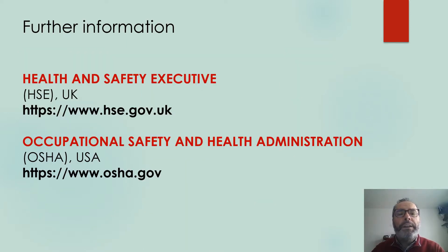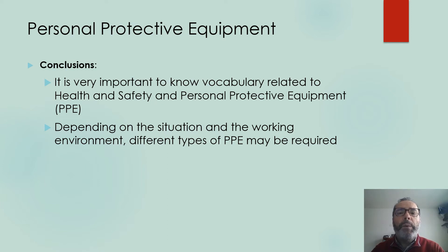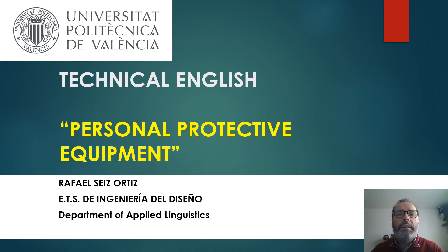Here you can find further information. Two relevant websites have been selected: one from the UK — the Health and Safety Executive — and the other from the USA — the Occupational Safety and Health Administration of the American Government. It is very important to know vocabulary related to health and safety and personal protective equipment, or PPE. Depending on the situation and working circumstances, different types of PPE may be required. Thank you very much, and I hope you found this useful.